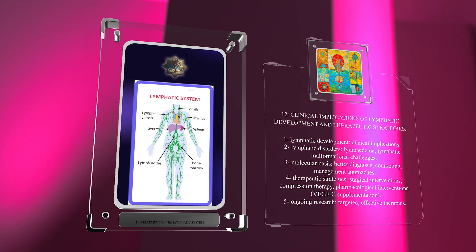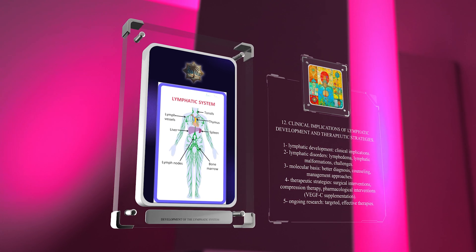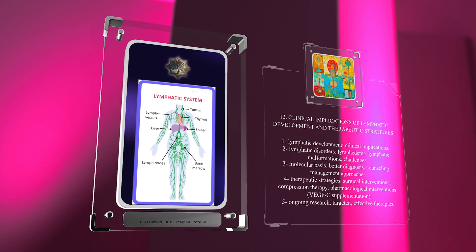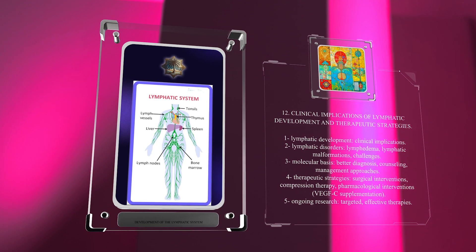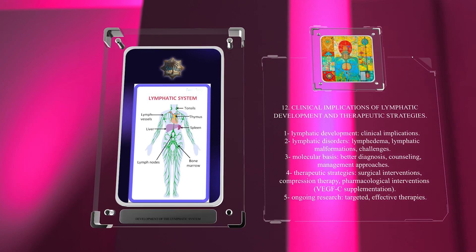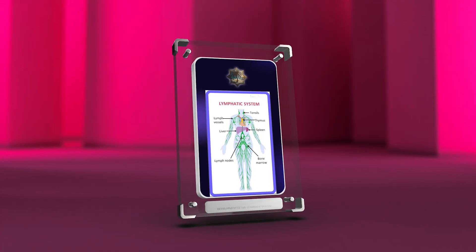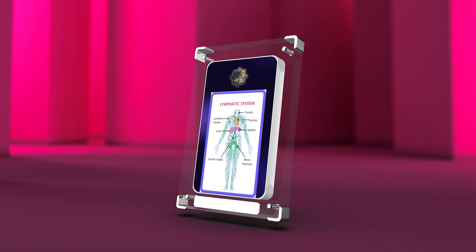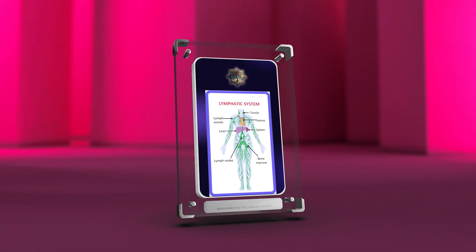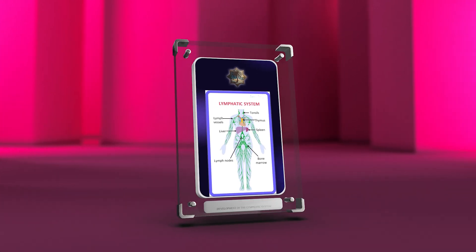Therapeutic strategies, including surgical interventions, compression therapy, and pharmacological interventions such as VEGFC supplementation, aim to improve lymphatic function and alleviate symptoms. Ongoing research in lymphatic development offers hope for more targeted and effective therapies in the future. The lymphatic system undergoes complex processes during embryonic development. Understanding these processes helps us diagnose and treat lymphatic disorders, and this knowledge is essential for medical students to contribute to research and improve patient care.